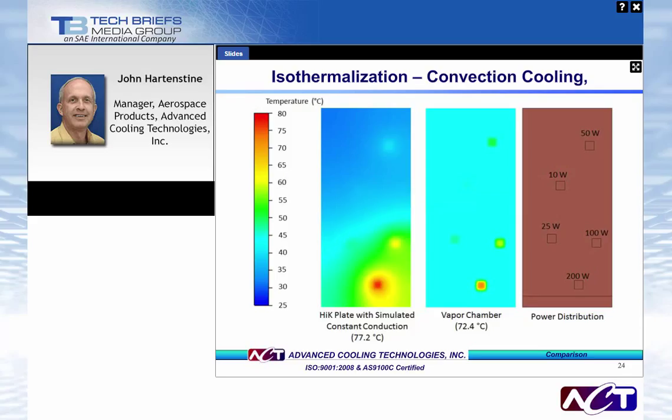An additional case study evaluated cooling discrete heat sources over a common plate using convection cooling off the backside. Multiple 1 cm² locations with heat loads ranging from 10 to 200 W/cm² were placed over the plate. Low heat flux components almost disappear in results, while higher heat fluxes tend to spread the thermal load. The takeaway: if you want to keep something as isothermal as possible, use a vapor chamber.